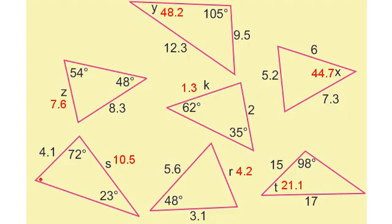In this question, I hope you realised that you had to use the fact that the angles in a triangle add up to 180 to find this angle first of all. In this question, you needed to use the sine rule to find this angle and then take these two angles away from 180 to give this answer.